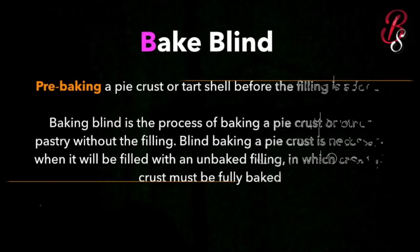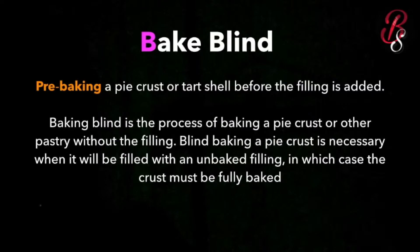First we have baked blind. Baked blind means pre-baking a pie crust or tart shell before the filling is added. It is the process of baking a pie crust or other pastry without the fillings. Blind baking a pie crust is necessary when it will be filled with an unbaked filling, in which case the crust must be fully baked.